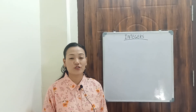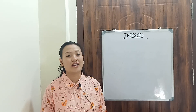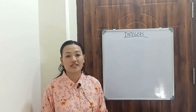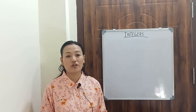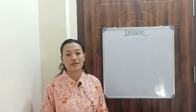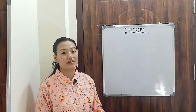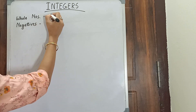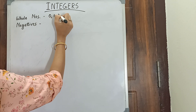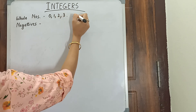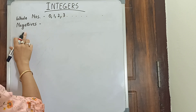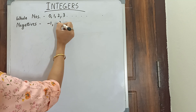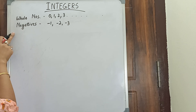Hello viewers, welcome back to my channel Maths Tutorial. Today's topic is integers. Integers are a collection of whole numbers and their negatives. Whole numbers are the numbers starting from 0, 1, 2, 3 up to infinity — infinity means which has no end. Negatives are the numbers with a negative sign like minus 1, minus 2, minus 3, etc.